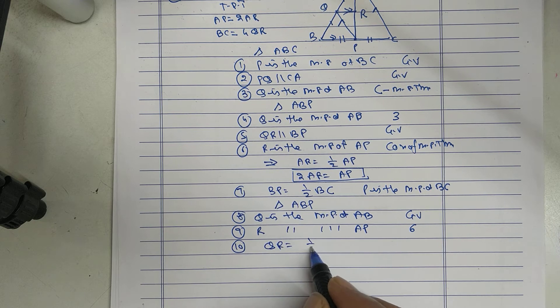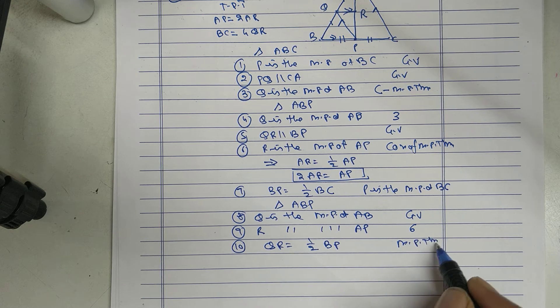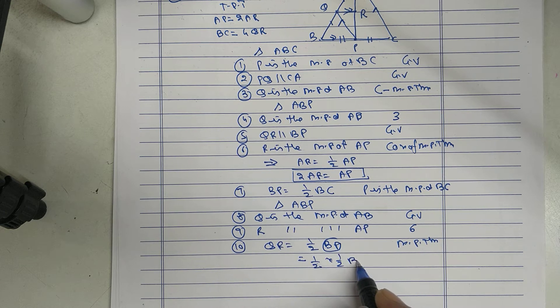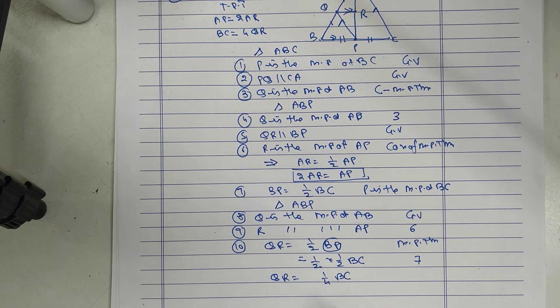QR is half of BP. Now, BP is replaced by half BC from Statement 7. So, QR is quarter of BC.